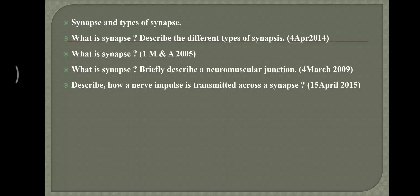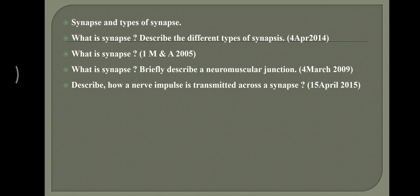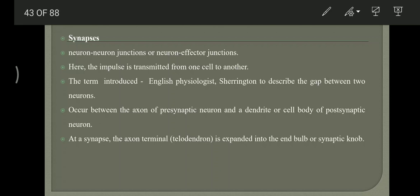We will learn about synapses and types of synapses. Synapses are neuron-neuron junctions or neuron-effector junctions — that is, the junction between one neuron and another neuron, or between a neuron and an effector.